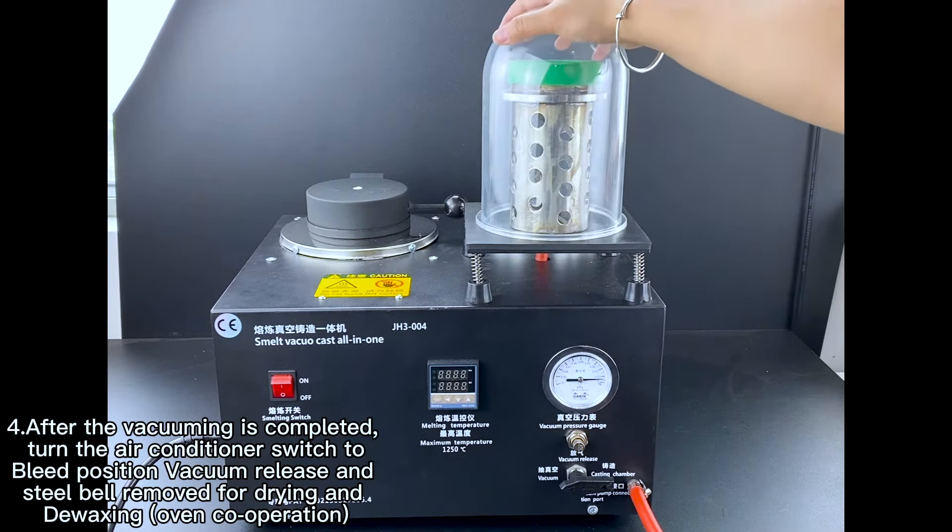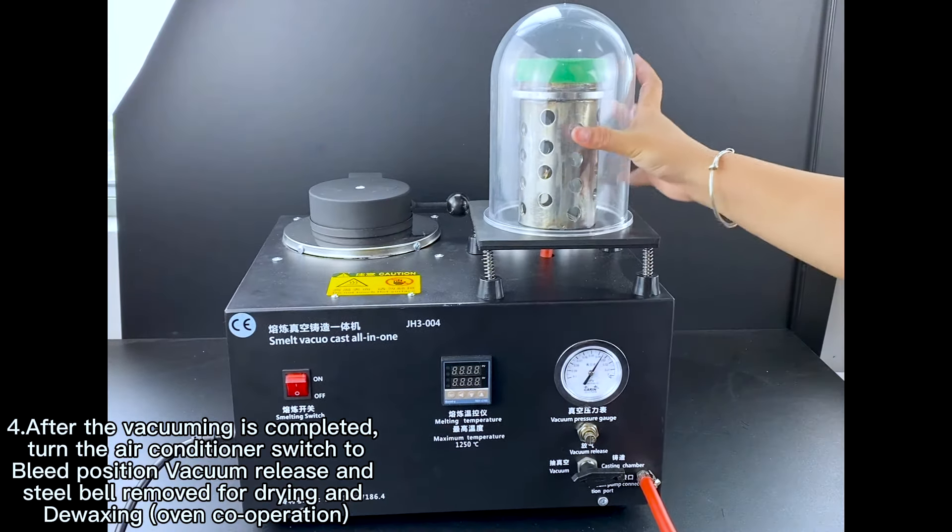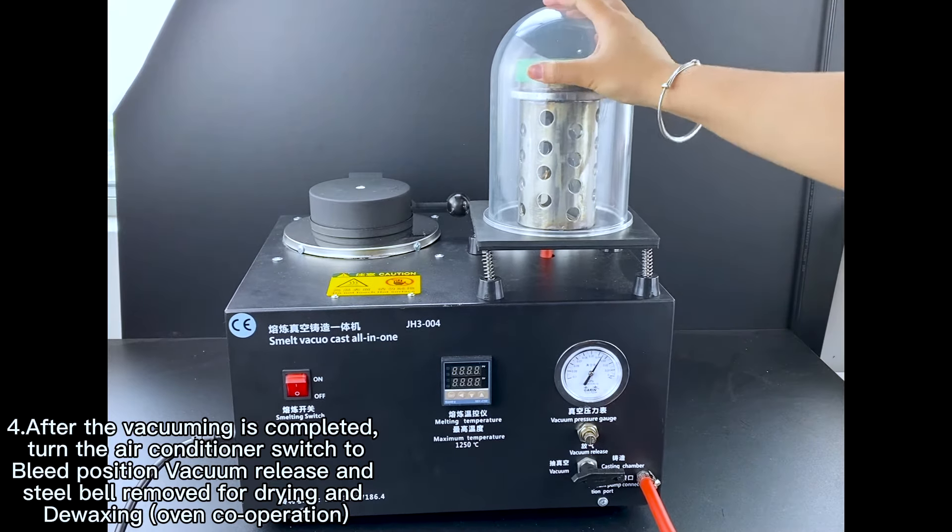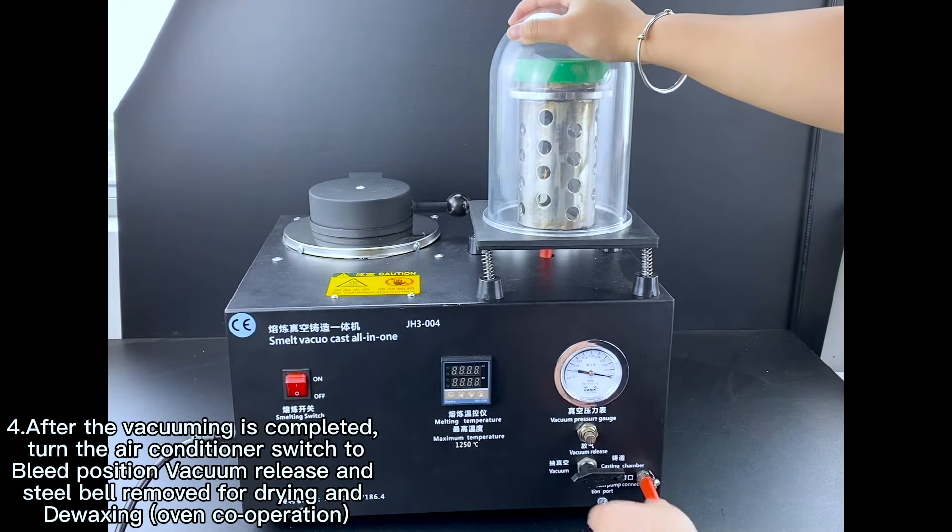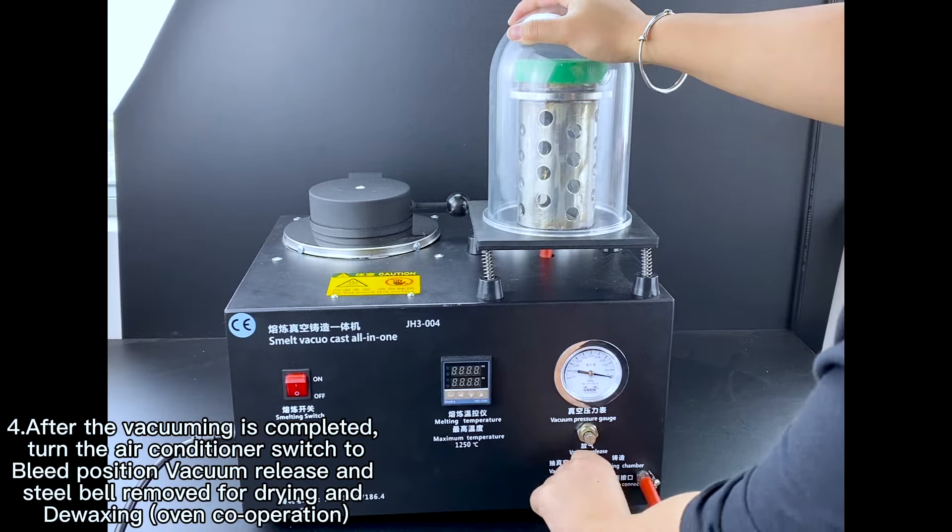4. After the vacuuming is completed, turn the air conditioner switch to bleed position for vacuum release and remove the steel barrel for drying and de-waxing oven co-operation.